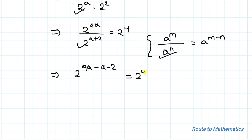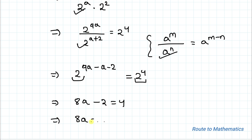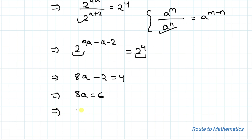Since both sides have the same base, we can equate the powers directly: 9a minus a minus 2 equals 4, which means 8a minus 2 equals 4, so 8a equals 6, giving a equals 6/8, which simplifies to 3/4. That is our answer. I hope you understood the solution. Thanks for watching — please subscribe to my channel and click the bell icon for more interesting videos!